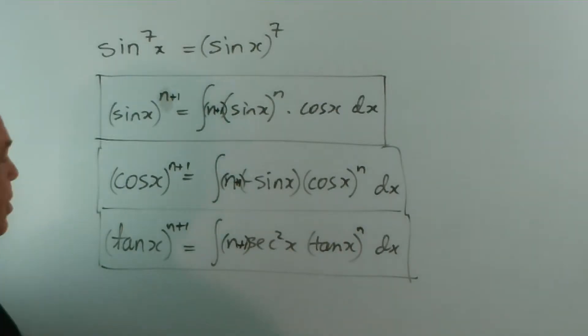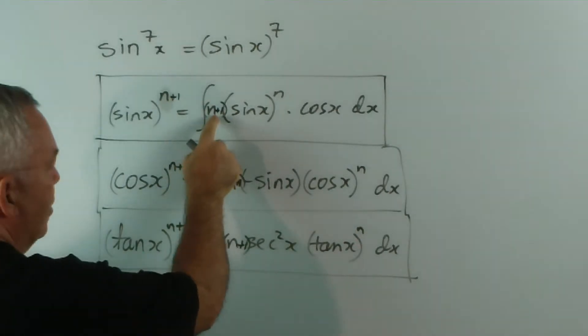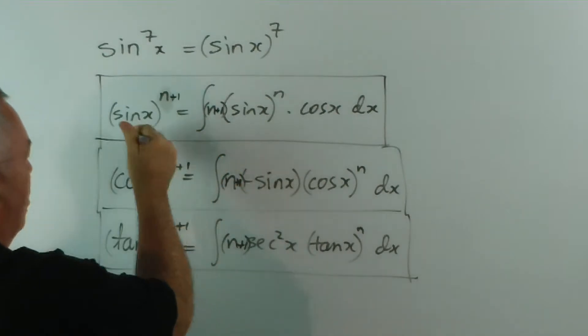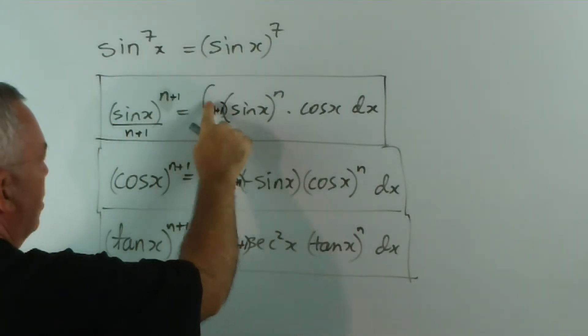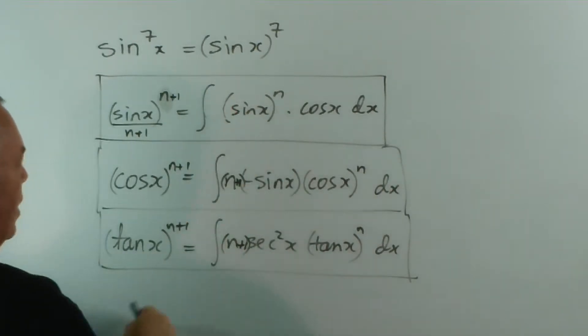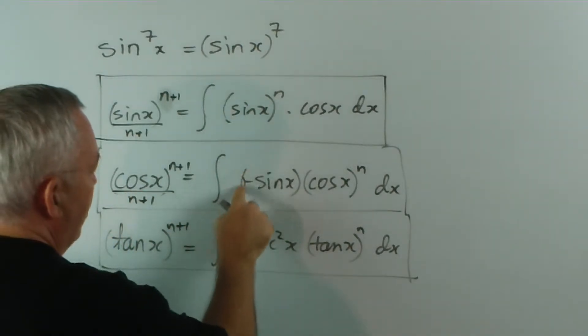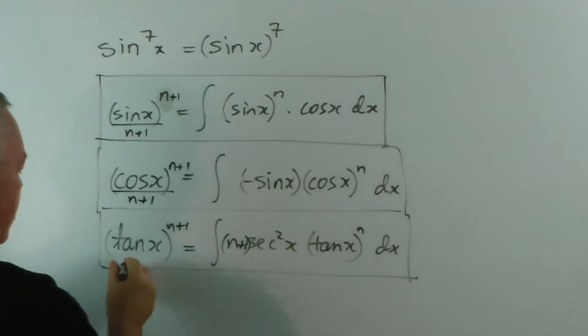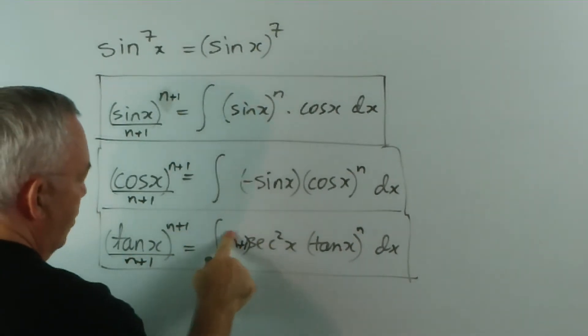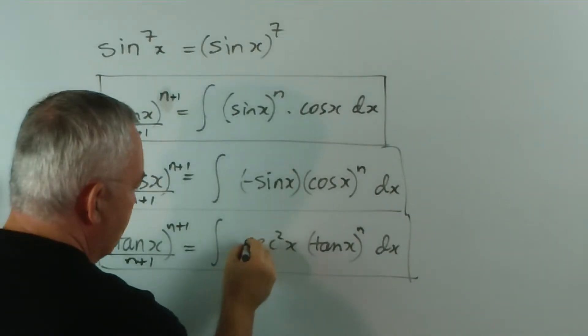If we take just one more step, because n plus 1 is a constant, we can actually divide both sides by n plus 1. This is what whiteboards are good for. I can do the same here, and I can do the same here.